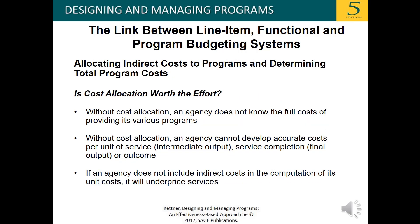Is cost allocation worth the effort? Without cost allocation, an agency does not know the full cost of providing its various programs. Without cost allocation, an agency cannot develop accurate costs per unit of service — the intermediate output, service completion (the final output), or outcome. If an agency does not include indirect costs in the computation of its unit cost, it will underprice services.